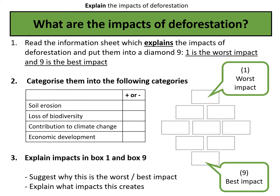What we have here is looking at the impacts of deforestation. On the next slide we have nine statements looking at the impacts of deforestation in a little bit more depth. I would like you to rank these statements from one to nine, where one would be the worst impact and nine would be not necessarily the best impact but not the worst. Once you've categorised them with positive being nine and negative being one, I then want you to categorise them into the following categories: soil erosion, loss of biodiversity, contribution to climate change, and economic development.